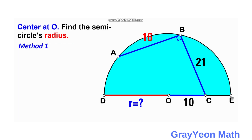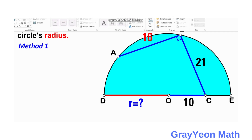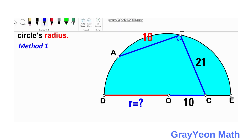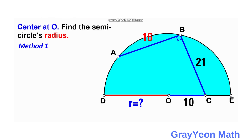For our first method, we need to draw a segment from the center of this semi-circle to be the perpendicular bisector of segment AB.